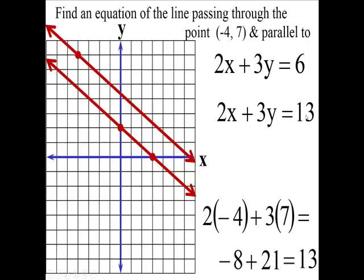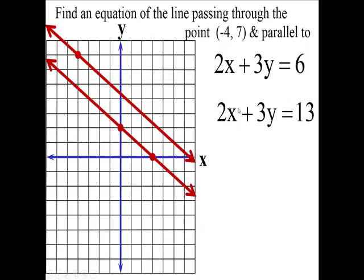The number is 13 here. So this line here, this equation here, is the equation for this line, which is parallel to the original line. Because in both cases they have 2x plus 3y. So the slope of both these lines is negative 2/3.